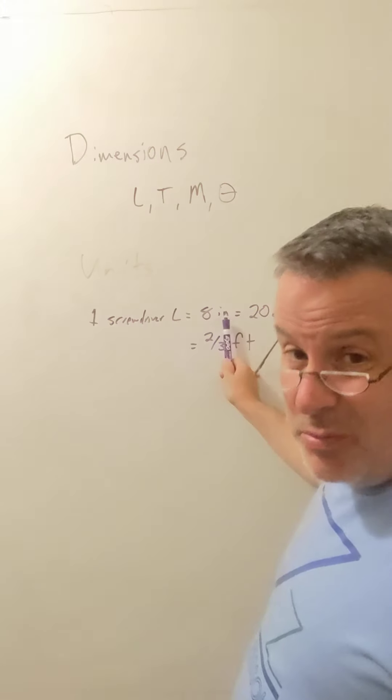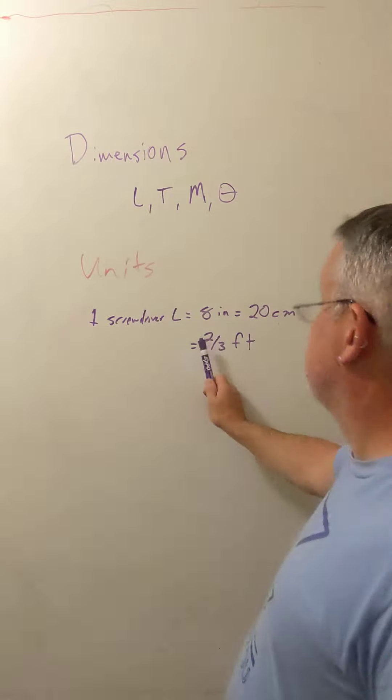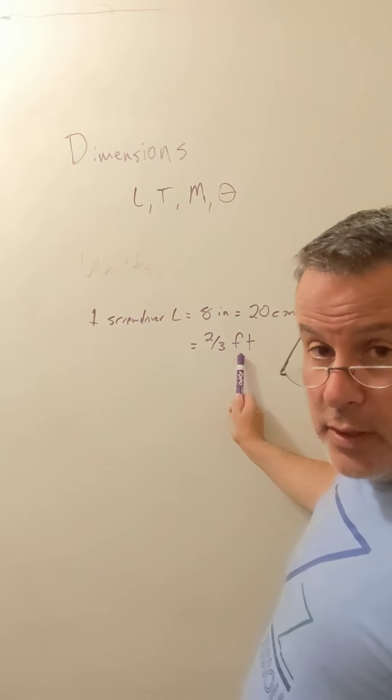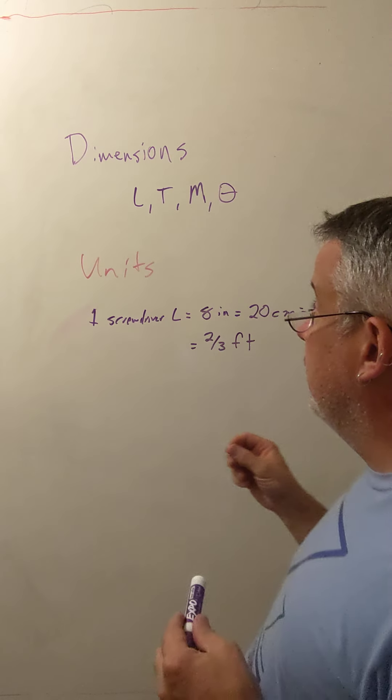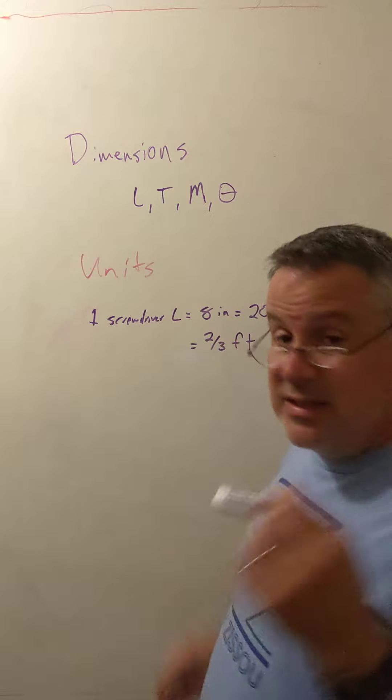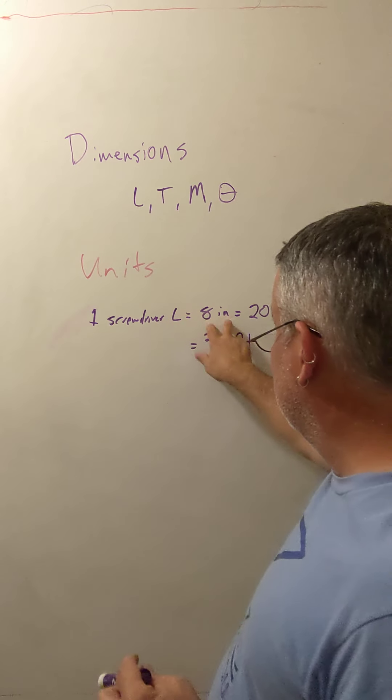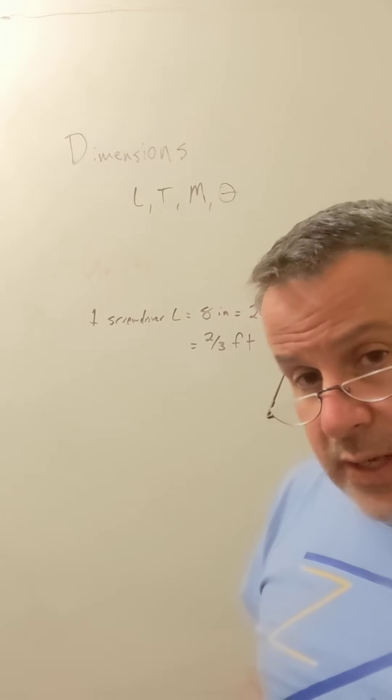These aren't exactly equal, but they're pretty close, which is also equal to 0.2 meters, which is also equal to two-thirds of a foot. This is one way of thinking about how things with different units can be related to one another, but notice that the dimensions are consistent. Length, length, length, length, length. That's what we already said we had to do to get an equality.